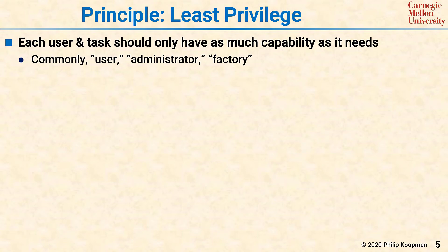Because it's always possible that some user's account will be subverted, an additional defense mechanism is called the principle of least privilege. Least privilege means that every user, every account, every task only has the minimum capabilities that it needs to get its job done.